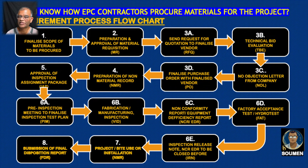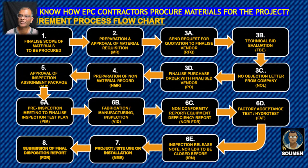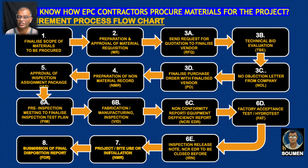After technical evaluation is finalized, a no-objection letter is obtained from the company confirming that the selected vendor can supply the material. Then the purchase order is finalized with that vendor. After the PO is prepared, we need to prepare the Non-Material Record (NMR) at the preliminary stage. It will be updated at the advanced stage of fabrication, manufacturing, or inspection. The Inspection Assignment Package (IAP) is where the quality department becomes very busy with inspection activities.